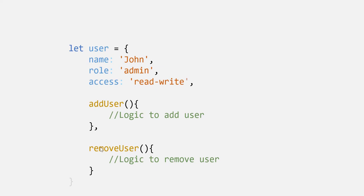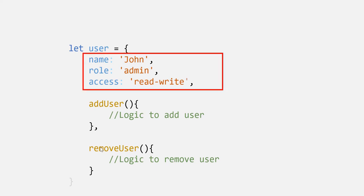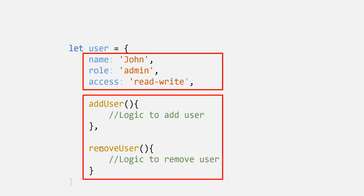The properties of an object are called data, and the methods of an object are called its behavior. So here in this example, name, role, and access are the data for this user object.